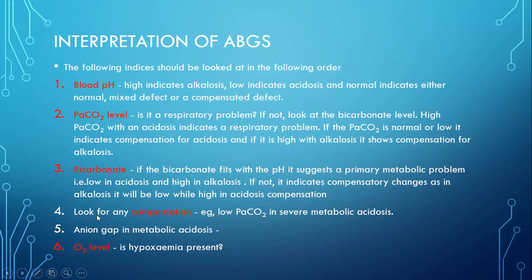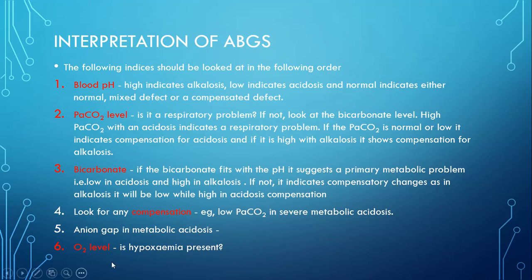After finding the primary defect, we look for compensation by examining CO2 and bicarbonate levels. Then we look for the anion gap in metabolic acidosis. Finally, we look at O2 levels — both partial pressure of O2 and oxygen saturation — to determine whether the patient is hypoxemic, meaning having low oxygen levels in the blood.